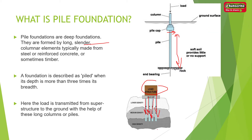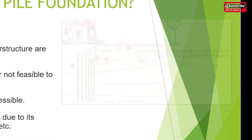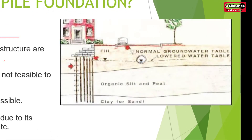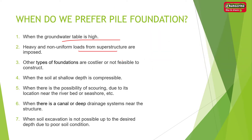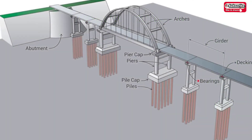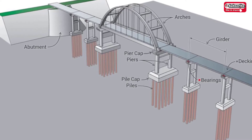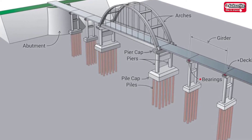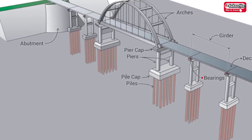When do we prefer pile foundations? When the groundwater table is high, we cannot construct shallow foundations, so we prefer pile foundations. Also when heavy and non-uniform loads from the superstructure are imposed, or when other types of foundations are costlier or not feasible to construct, or when the soil at shallow depth is compressible.